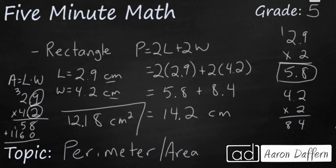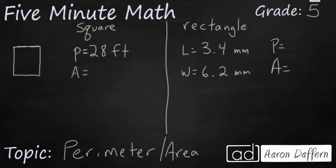Now it's time for you to try. We have a square here and the perimeter is 28 feet. Can you find the area? And we have a rectangle that is listed. All we have is the length and the width. Can you find the perimeter and the area? When you have your answers, go ahead and unpause the video and check your work.